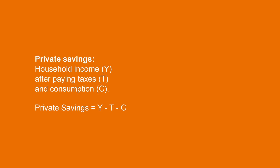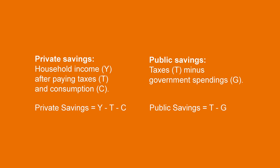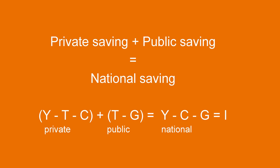There are two types of savings in the economy. Private savings is equal to household income after paying taxes to the government and after all consumption spending. The government also saves — public savings is the difference between the incomes of the government, that is the taxes received, and the expenditures of the government. When we sum the private savings of households and the public savings of the government, we obtain national savings. You can see that taxes cancel out when we open the brackets. National savings are equal to all incomes minus consumption and minus government spending, and they are exactly equal to the amount of investments in the economy.